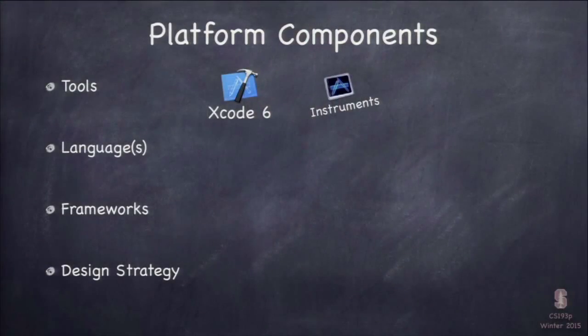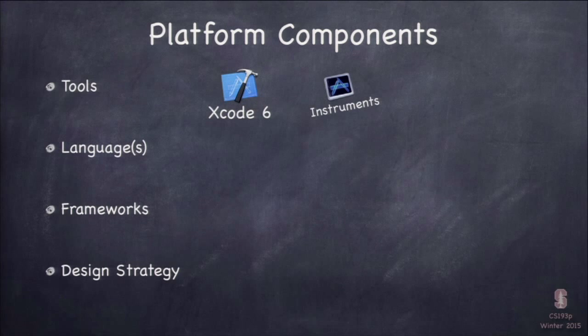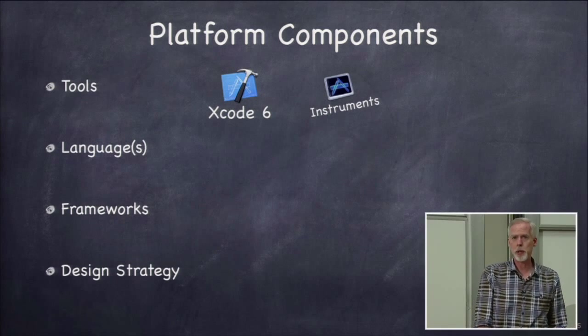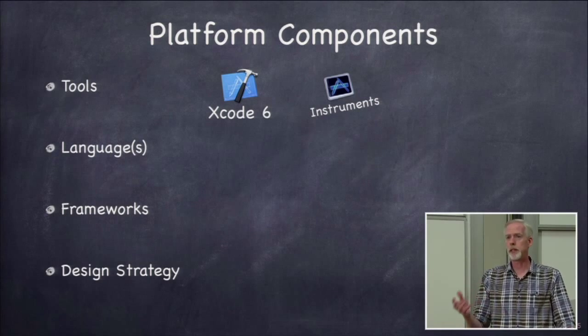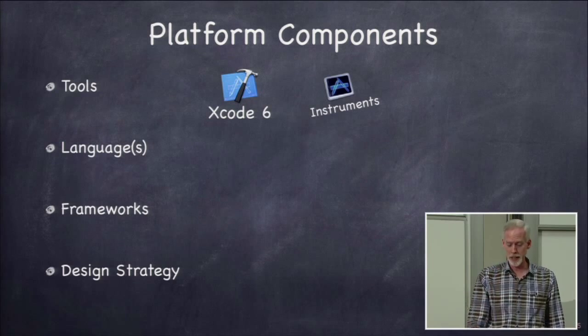The development platform is Xcode 6, which is everything — your code editor, compiler, and debugger — all in one app. You won't be typing in a terminal; we'll be in Xcode 6. There are two languages in iOS: Objective-C, the original language that's been around 25-30 years, and Swift, which Apple introduced last summer. We're going to learn Swift because it's modern and concise.